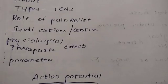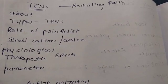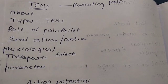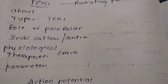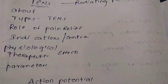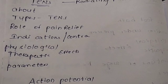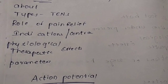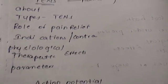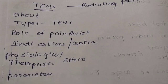TENS — used mainly for radiating pain. About the definition, types of TENS: high TENS and low TENS. Next is the role of TENS in pain relief. Indications, contraindications, effects, and parameters are all important.